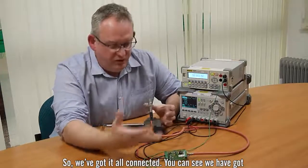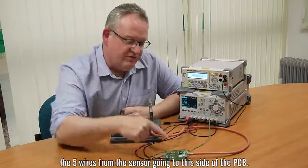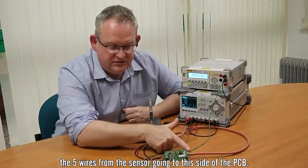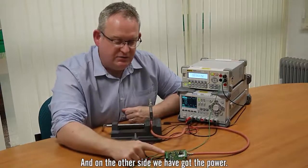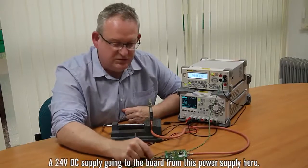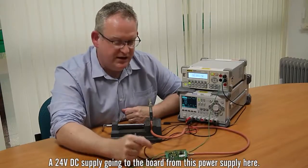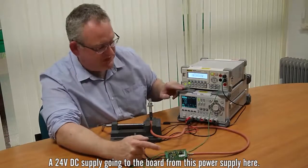So we've got it all connected up here, you can see we've got the five wires from the sensor going to this side of the PCB and on the other side we've got the power. So we've just got a 24 volt DC supply going to the board from this power supply here.